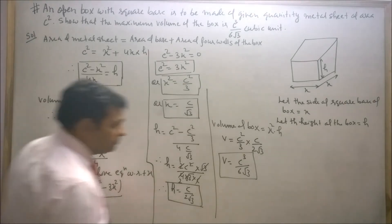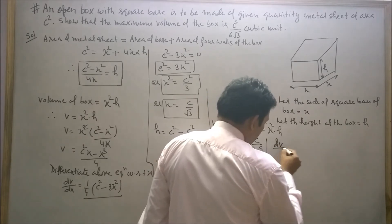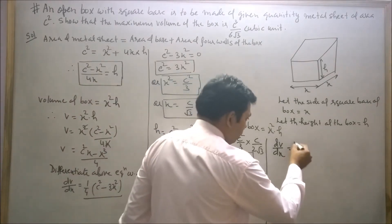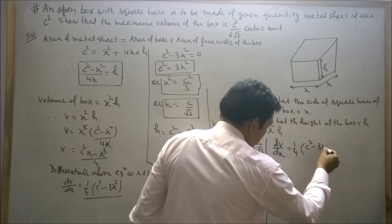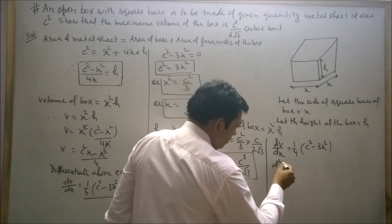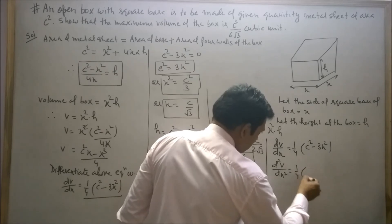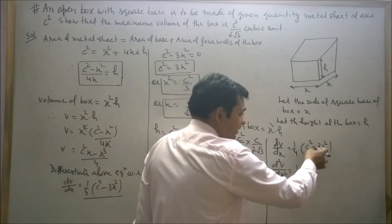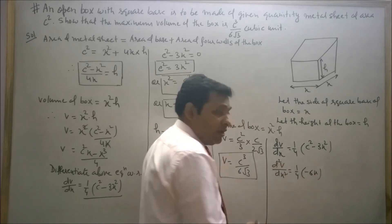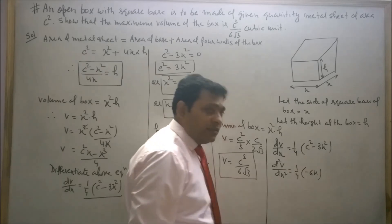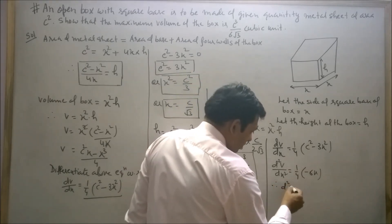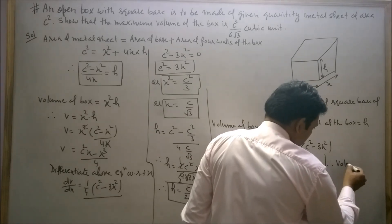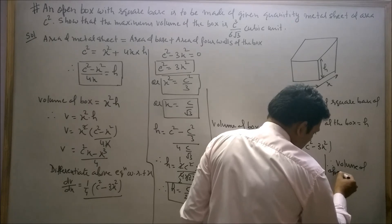Now again differentiate to confirm the maximum. dV over dx equals 1 by 4 times (C squared minus 3x squared). Therefore d squared V upon dx squared equals 1 by 4 times (minus 6x). Since c is constant, its differentiation is 0. Since x is positive, d squared V upon dx squared is less than 0. Therefore the volume of the open box is maximum.